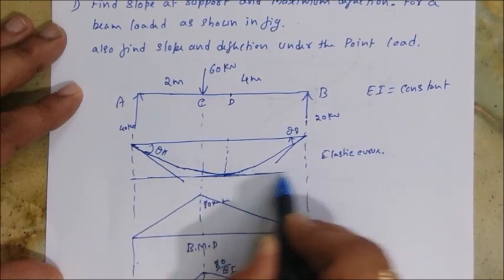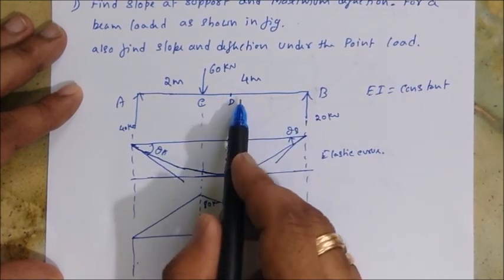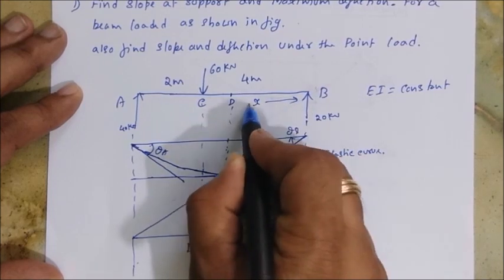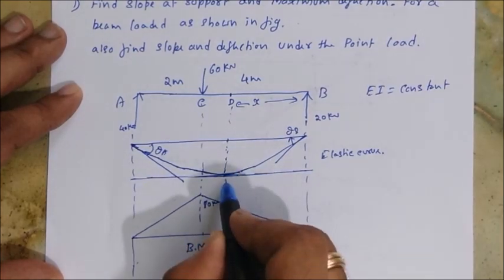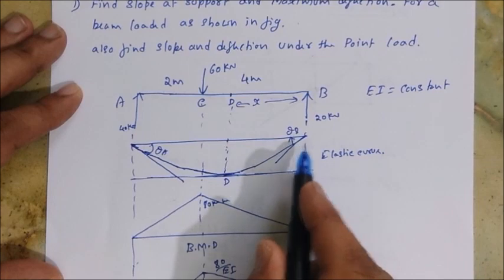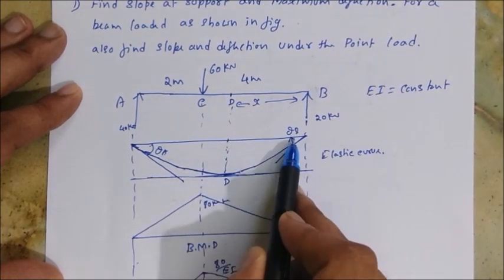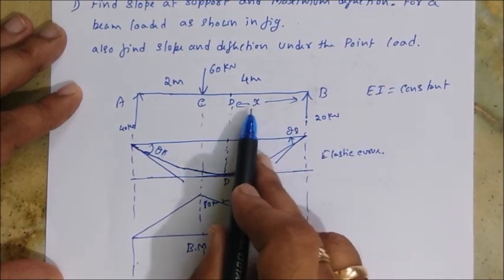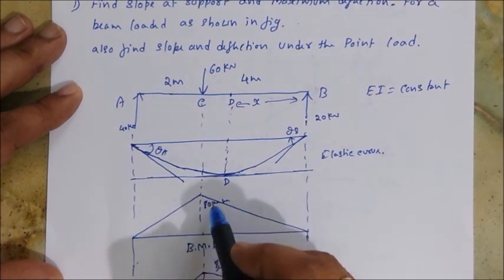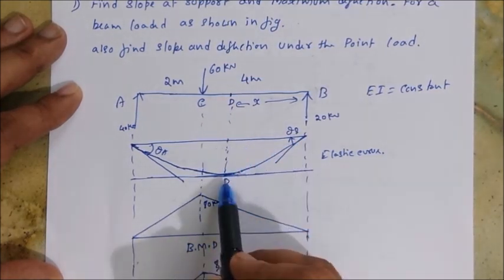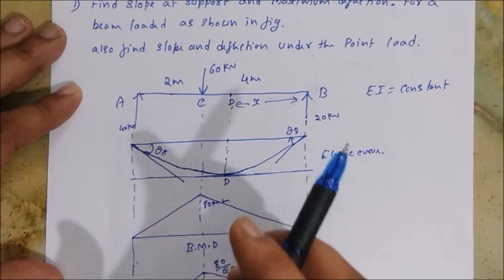The problem is we don't know the location of point D, so I'll call that distance X. Since the location of D is unknown, I cannot directly use D as a reference point. Instead, I will calculate θ_B, because θ_B is very important. The distance X is measured from B, but I can't take B and D directly since I don't know where D is.